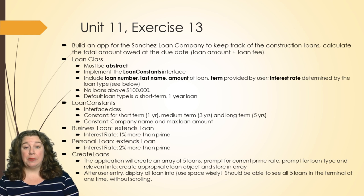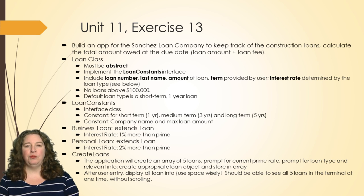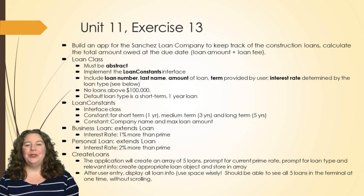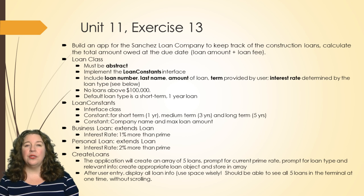We have two subclasses: business loans and personal loans. The subclass will extend your loan and assign an interest rate that is 1% more than prime. Prime is a percentage rate — so 4.3 would be 4.3%. When you create your application, create an array of about five loans. You'll prompt the user for the current prime rate, then prompt for loan type and the other relevant information: last name, amount, and so on.